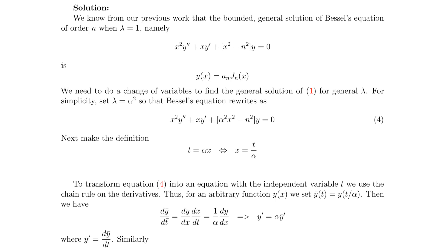Then, by the chain rule, we get dy bar dt is dy dx times dx dt, and dx dt is clearly 1 over alpha, so dy bar dt is 1 over alpha times dy dx. We solve for dy dx here on the right: y prime equals alpha times y bar prime.